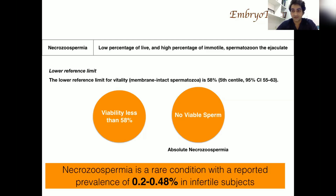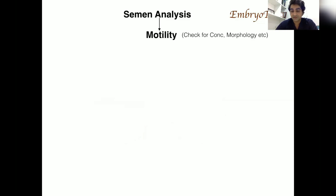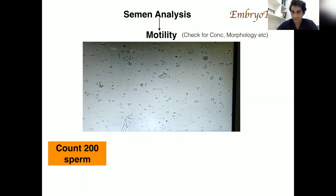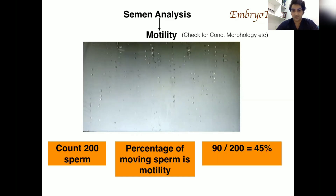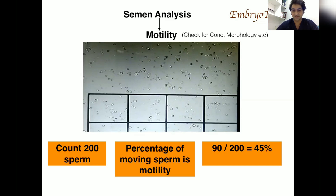The prevalence of necrozoospermia is 0.2 to 0.48% in infertile patients. To diagnose necrozoospermia, we start with semen analysis: we look for concentration, morphology, and microscopic and macroscopic examination. The main thing here is motility. We count 200 sperm — the percentage of moving sperm is the motility. For example, out of 200 if 90 sperm are moving then 45% is the motility.